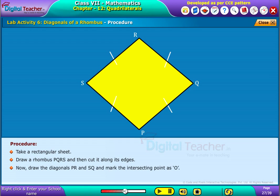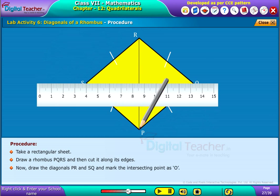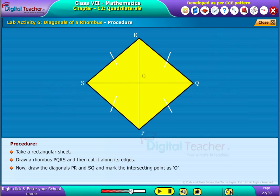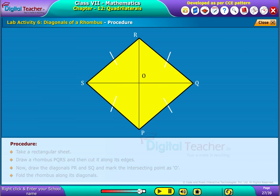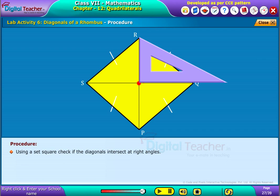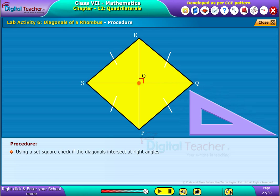Now draw the diagonals PR and SQ and mark the intersecting point as O. Fold the rhombus along its diagonals. Using a set square, check if the diagonals intersect at right angles.